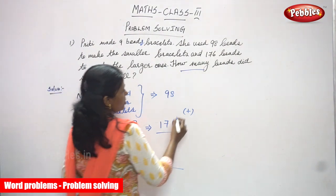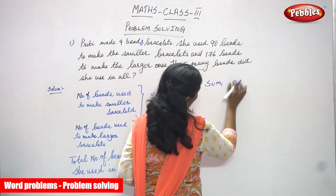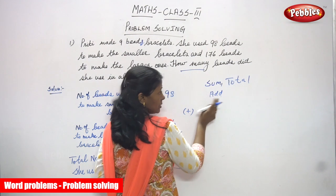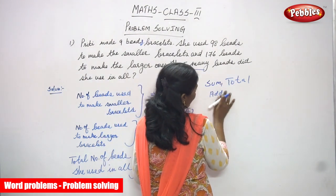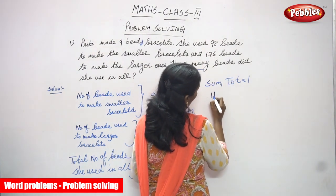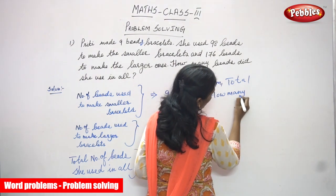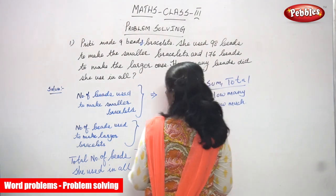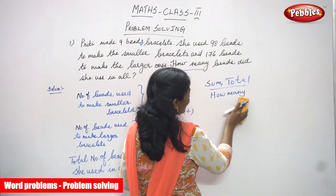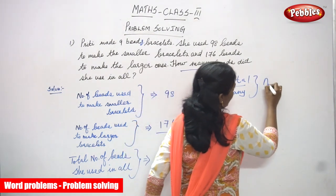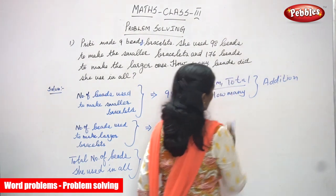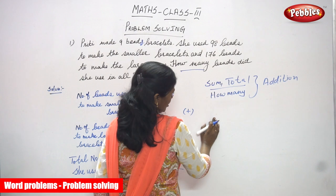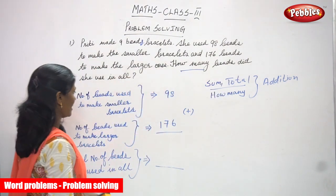When a question asks for the total, that means we do addition. The clue words for addition are: sum, total, how many, and how much. Sum means total — you have to find the larger combined number. These are the key clue words for addition: sum, total, and how many.